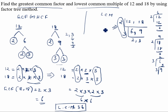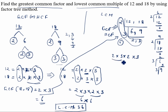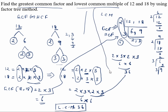For GCF using the division method: the common divisors were 2 and 3, so GCF = 2 × 3 = 6 — the same answer. For LCM, multiply all four numbers: 2 × 3 × 2 × 3 = 36 — the same answer again. You can see both methods give the same result. Choose whichever method is easiest for you. Thanks for watching this video!